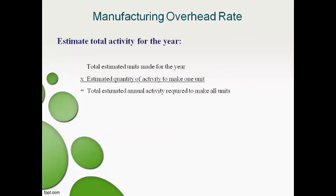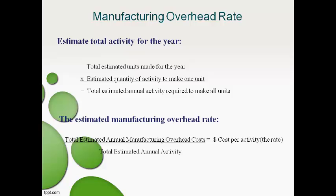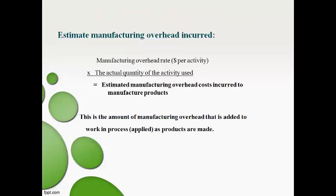The manufacturing overhead rate is used to estimate the cost incurred to make products during the period. A manufacturing activity that causes manufacturing overhead cost is chosen. The activity required to manufacture one unit is multiplied by the total units expected to be made to get the total estimated activity for the year. Total manufacturing overhead costs are divided by the total estimated activity to get the cost incurred each time the activity occurs. The manufacturing overhead rate is then multiplied by the actual quantity of activity that occurred during the period to get the estimated amount of manufacturing overhead costs incurred to make products.